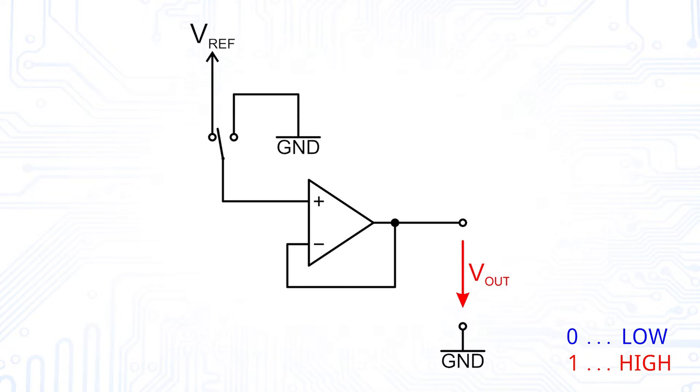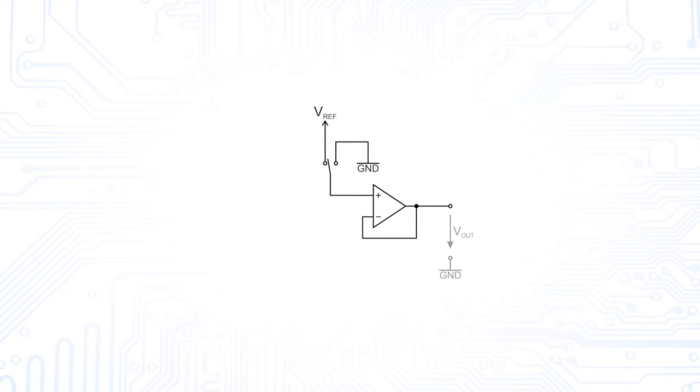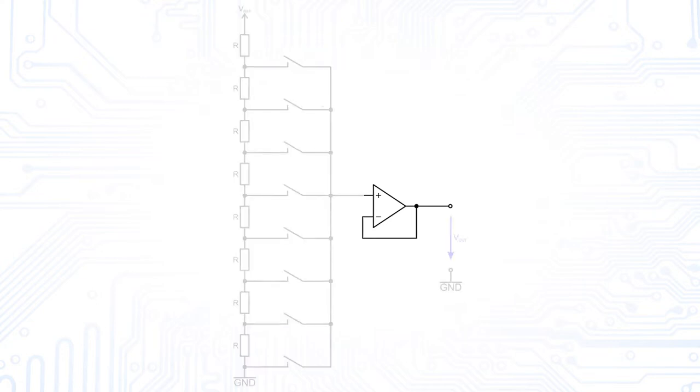Of course, one can say that two representable output voltage levels are not very satisfying. If you want to increase the resolution by setting several output voltage levels, you could simply divide the reference voltage by a voltage divider and switch the corresponding intermediate voltage levels through to the output.